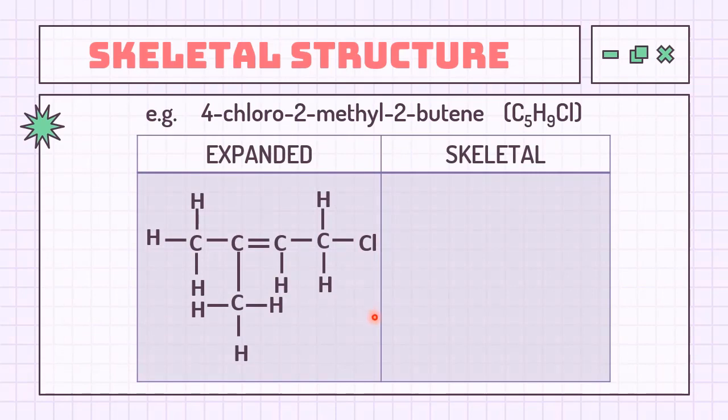Shown on the slide, the expanded structure of 4-chloro-2-methyl-2-butene. This structure has carbon chain only, so the first step is to form a skeletal structure by drawing the zigzag of carbon. Count how many carbons form the longer chain. In this structure, we have 1, 2, 3, and 4. There you go, a zigzag containing 4 carbons.